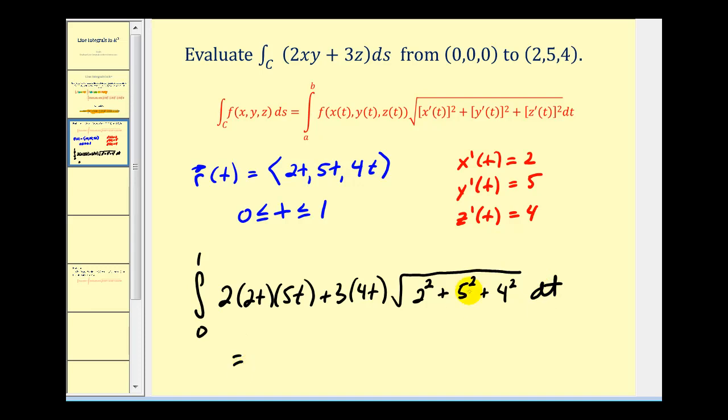Let's go ahead and simplify this. So we're going to have two times 2t times 5t, that's going to be 20t squared. This will be 12t. This will be the square root of four plus twenty-five plus sixteen, that's going to be the square root of forty-five. Let's go to the next page.